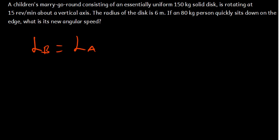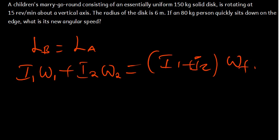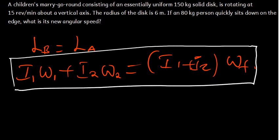We say angular momentum before is equal to angular momentum after. Before, we have the inertia of the disk — inertia one — times the angular velocity of the disk, plus the inertia of the person — inertia two — times the angular velocity of the person. This equals, since these two are moving with the same velocity after, inertia one plus inertia two, in brackets, times the final speed we want to find. This is the formula we use under angular momentum whenever we want to find the new velocity or inertia.